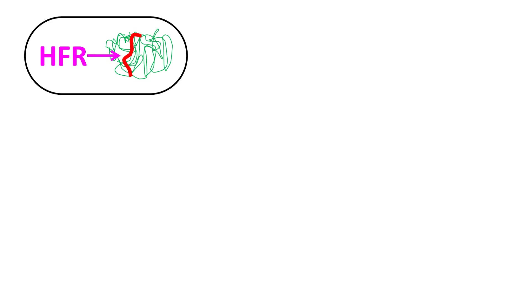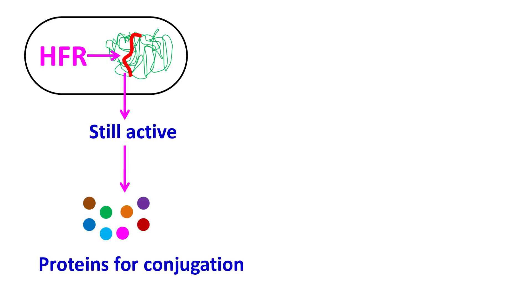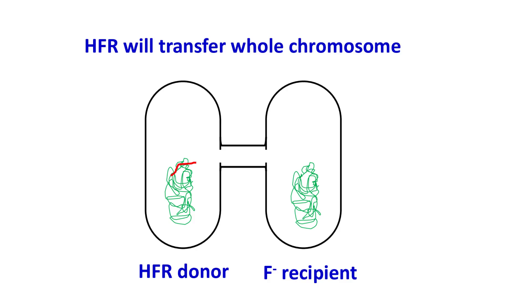The integrated F-plasmid is still active. This means it can still synthesize the proteins required for the formation of pili and conjugation. And during conjugation, the HFR DNA will transfer the whole chromosome from the donor to the recipient cell.